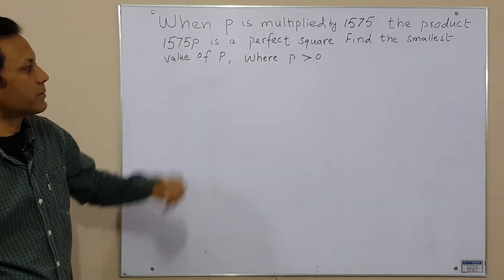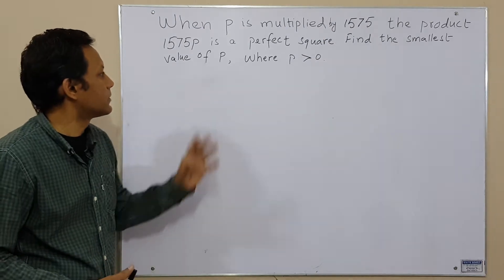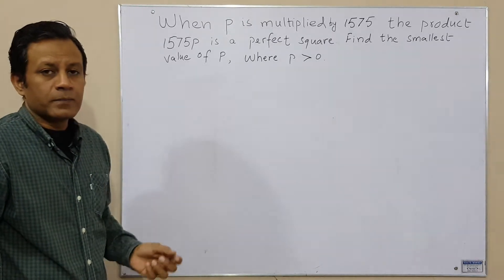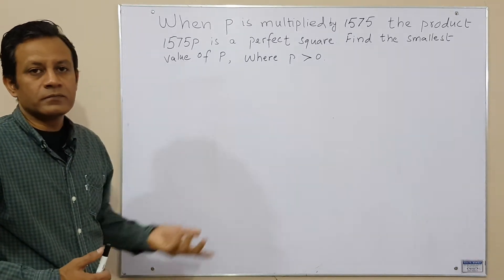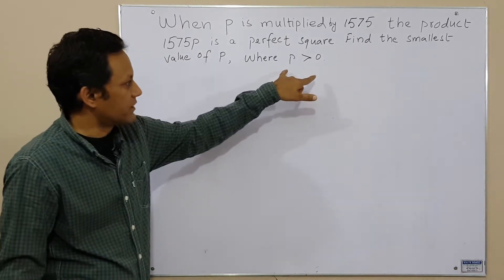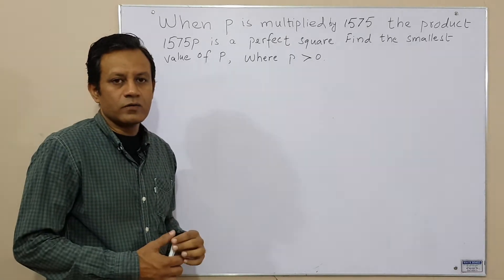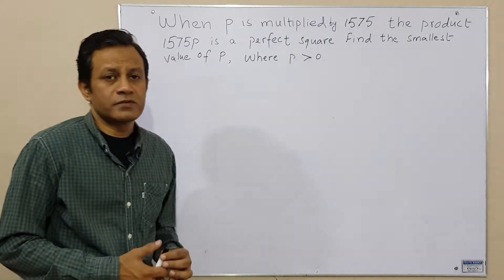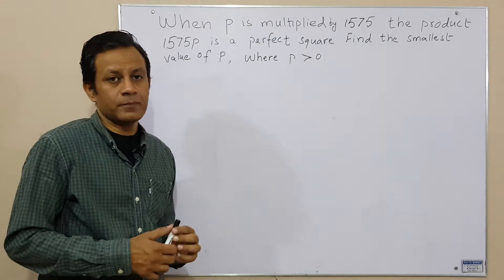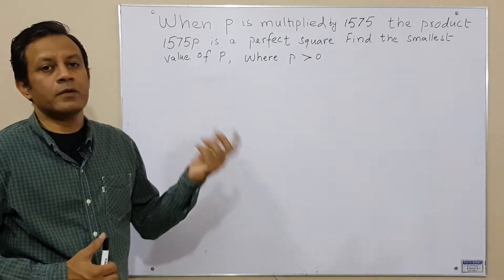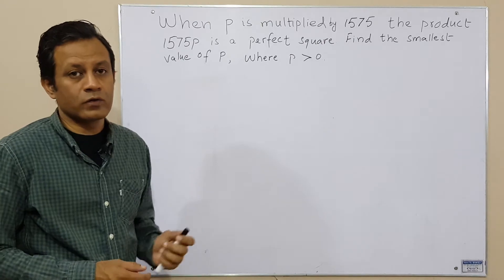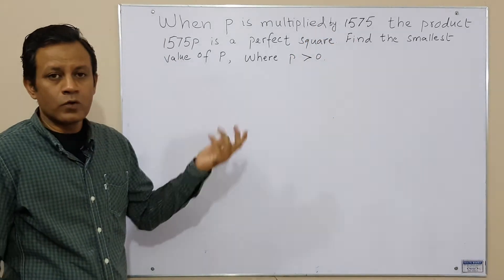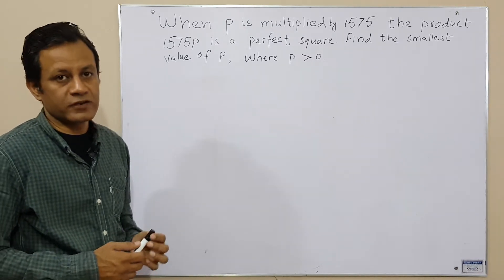p is greater than zero because when a number is multiplied by zero it becomes zero, so we restrict p to be greater than zero. In such problems we find the prime factors of the given number, which helps us determine whether every prime factor appears as a perfect square or not. If the number is not a perfect square, one or more of its prime factors are not perfect squares.